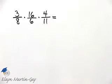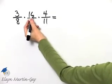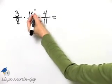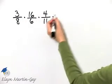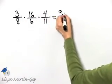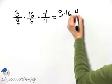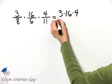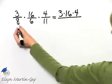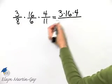Remember, with multiplication, order doesn't matter, so I can simply say that this is numerator times numerator times numerator — that's three times sixteen times four — over denominator times denominator times denominator.